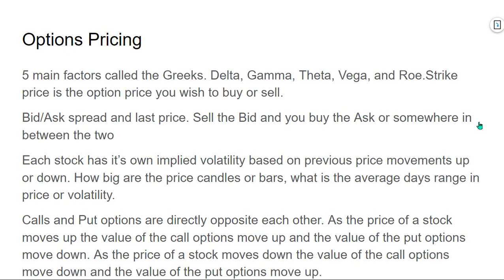When it comes to option pricing there are five main factors in the formula called the Greeks. Delta is related to the underlying price; gamma is related to how fast delta can change; theta is related to time; vega is related to volatility; and rho is related to interest rates. In general, rho doesn't matter that much, but it may matter right now with higher interest rates. The strike price is the option price at which you wish to buy or sell. I'm not going to get too deep into using the Greeks as far as the way I buy and sell options — they do matter and they're good to learn — but let's continue on to keep this video somewhat short.